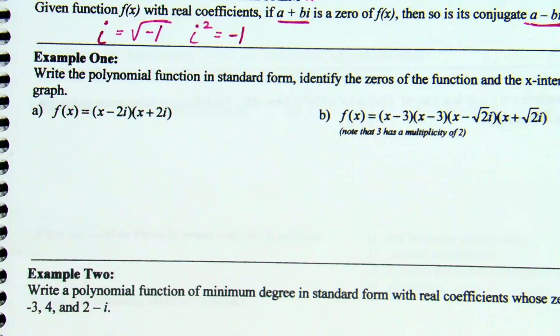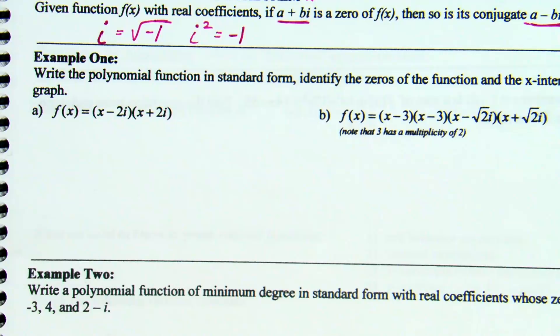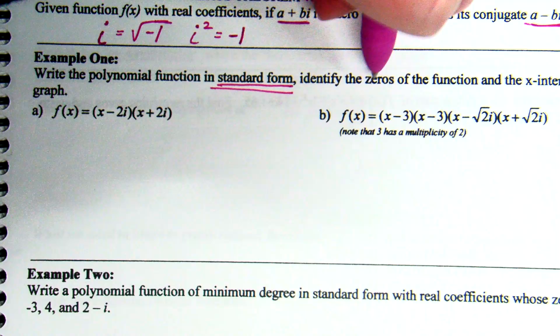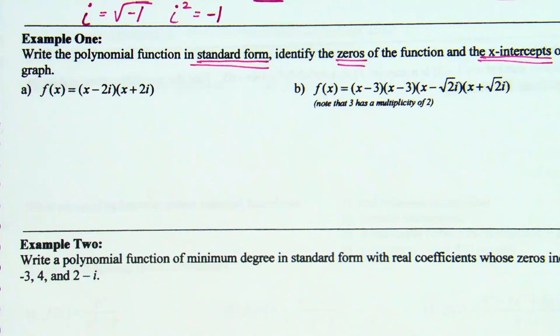Example one gives us a function and asks us to write the polynomial function in standard form, identify the zeros of the function, and the x-intercepts of the graph. So there are three things to do: write it in standard form, identify the zeros, and identify the x-intercepts. Let's start with example A and the idea of standard form — highest power to lowest power. Right now it's in factored form, so we're going to have to FOIL or multiply it out.